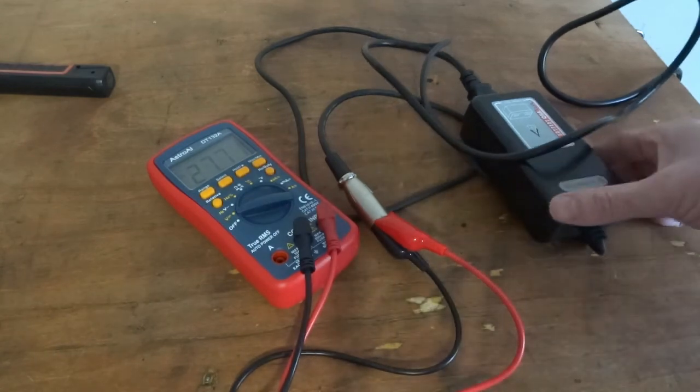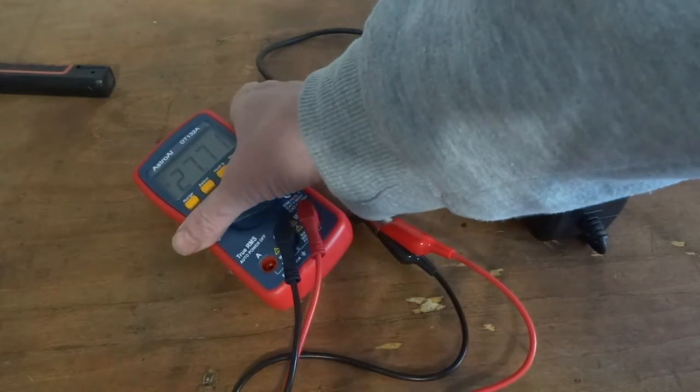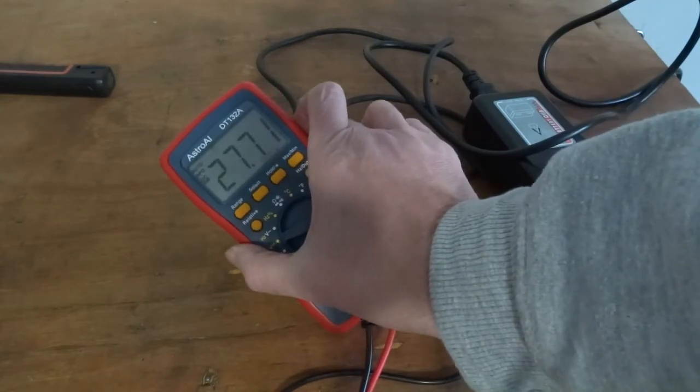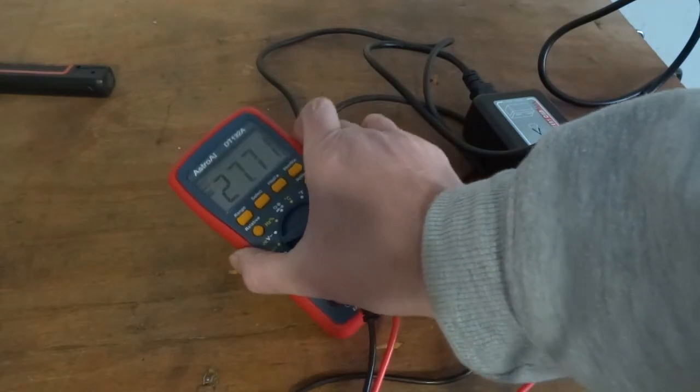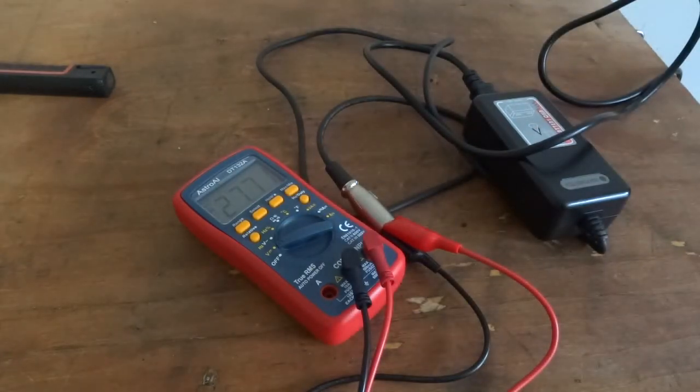So there you go. I've got 27 volts DC. So that's going to be a good charging voltage on a 24 volt battery system. So that's good.